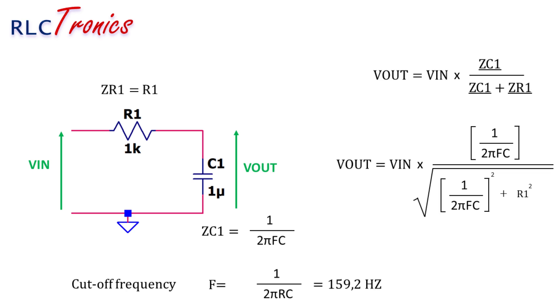There is one important parameter that you need to define for the sizing of the filter: the cutoff frequency. This parameter will allow you to select the values of the resistor and the capacitor of your circuit. In this example, the cutoff frequency is 159 Hz approximately.